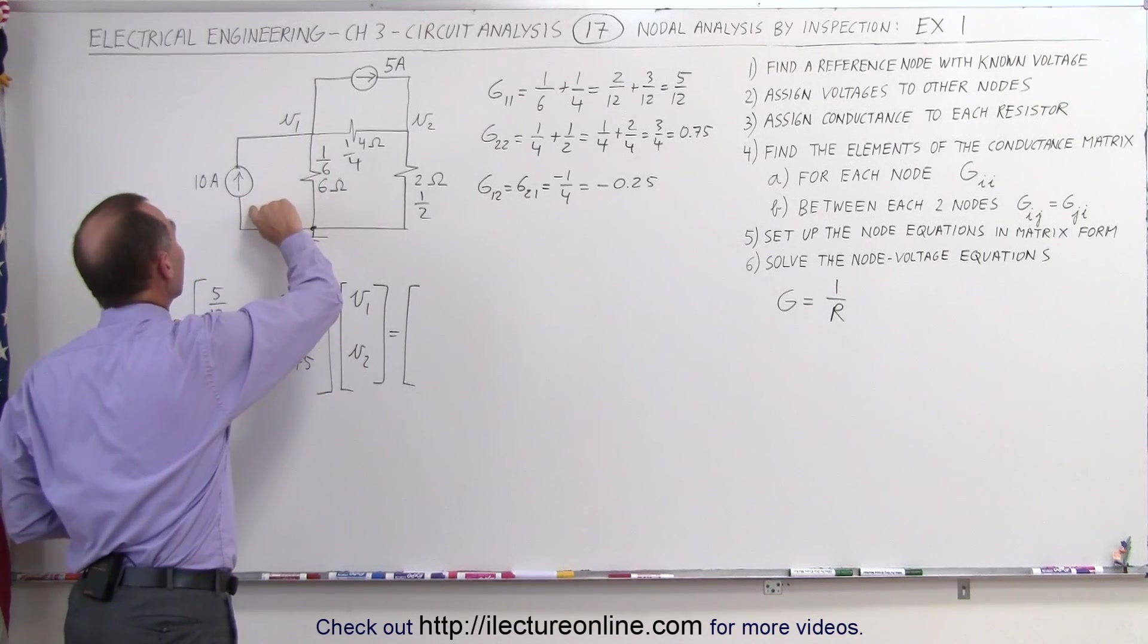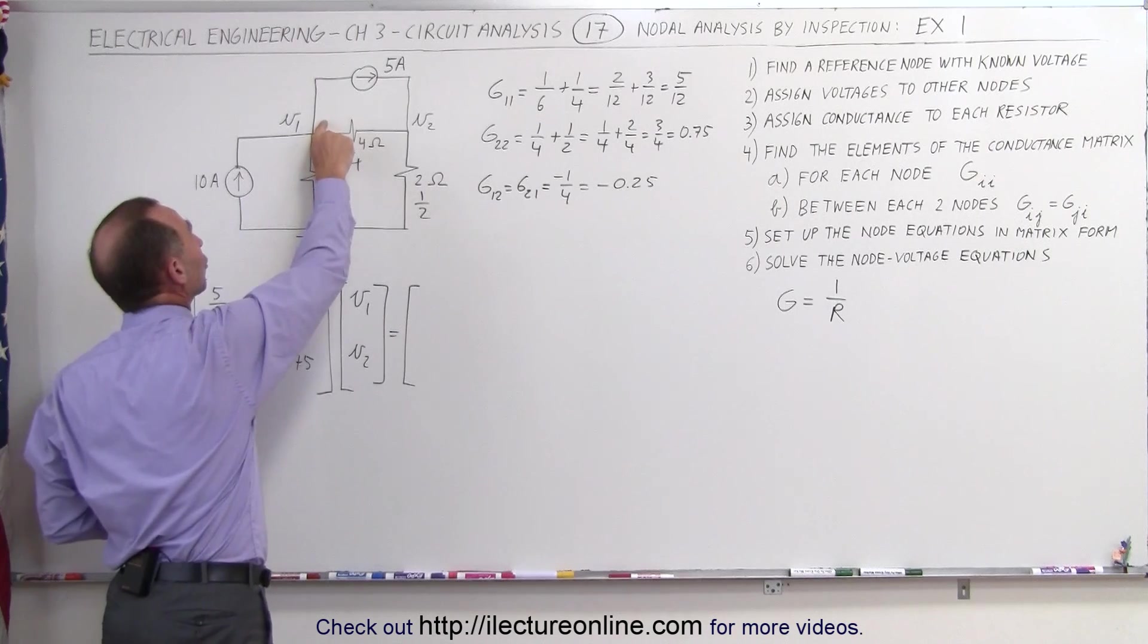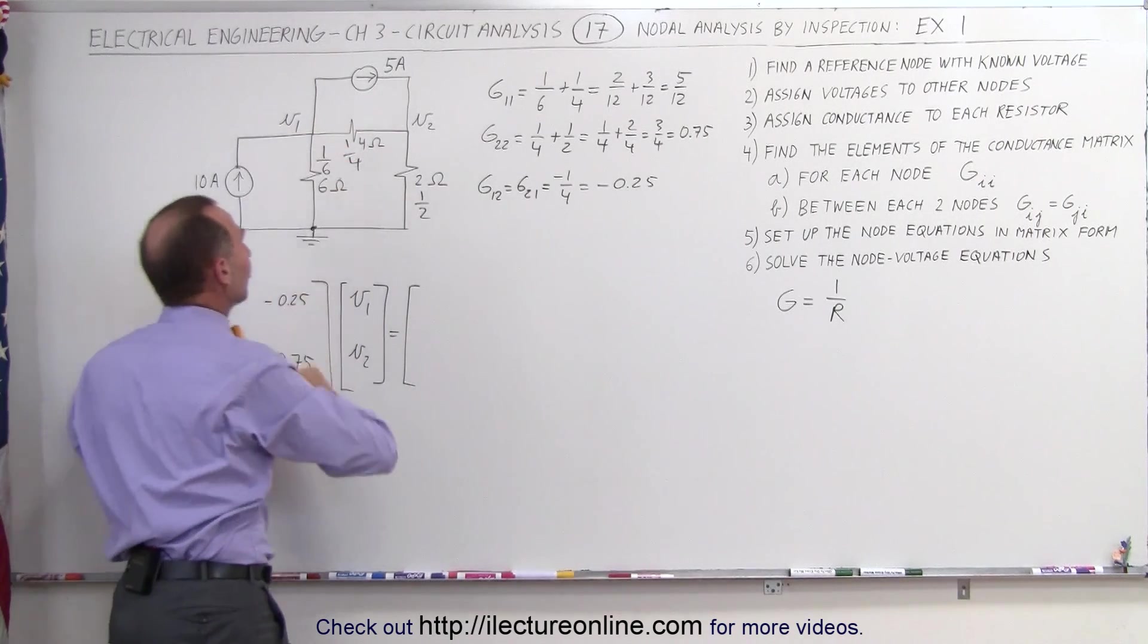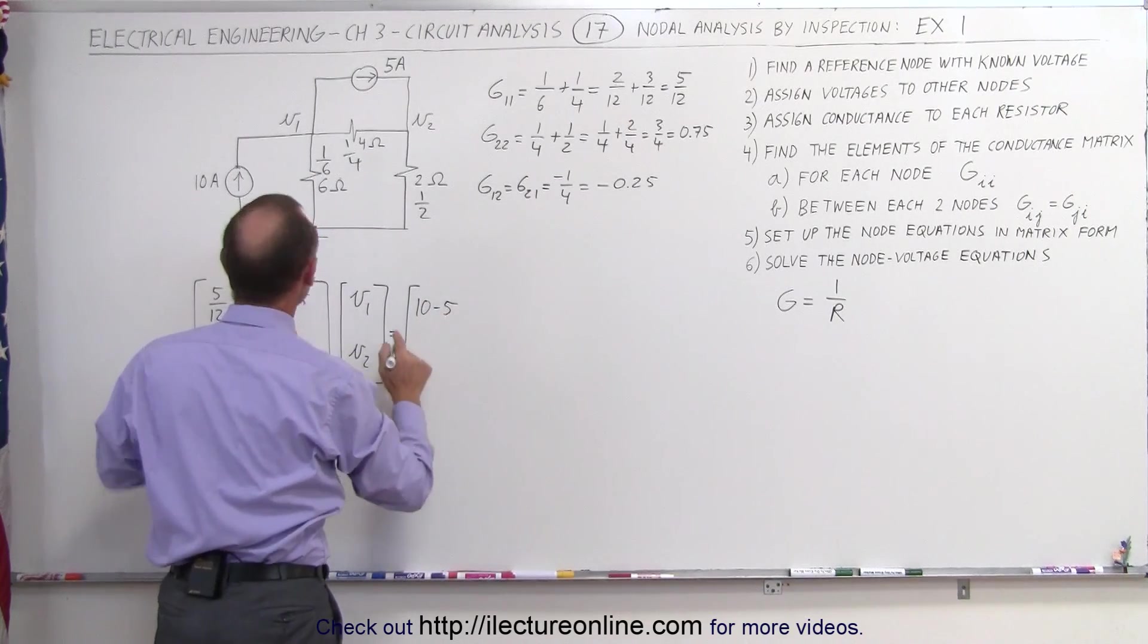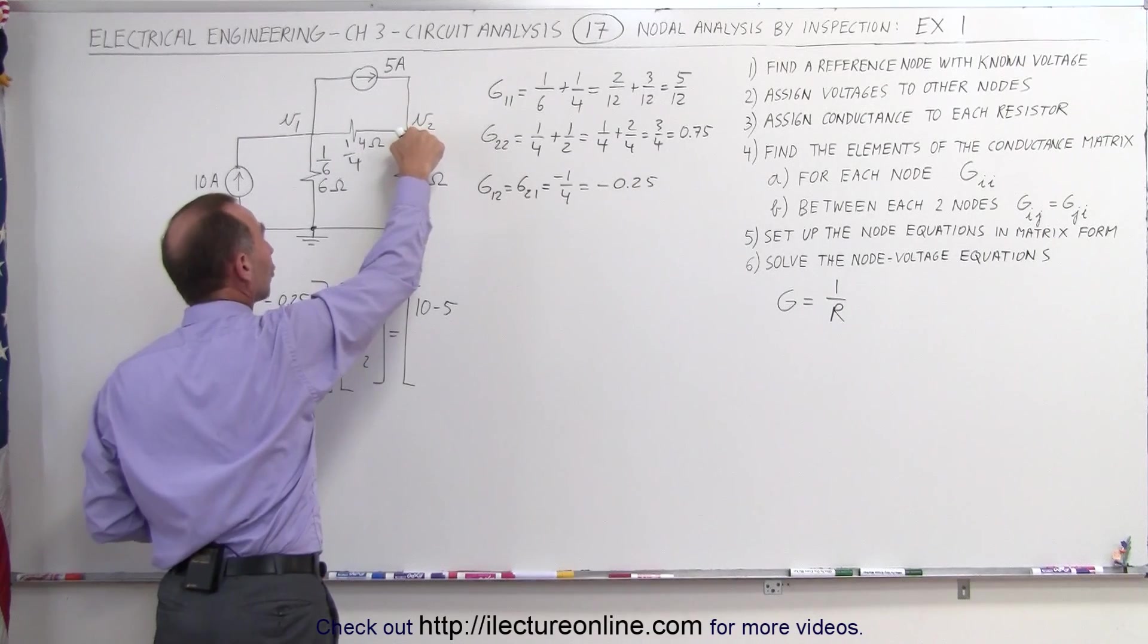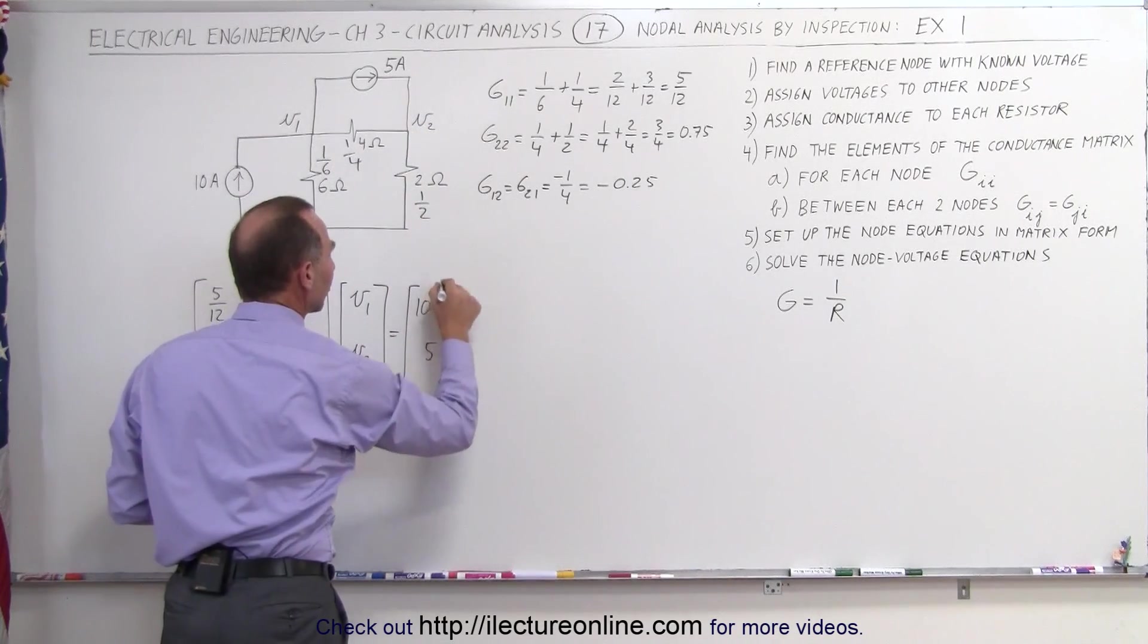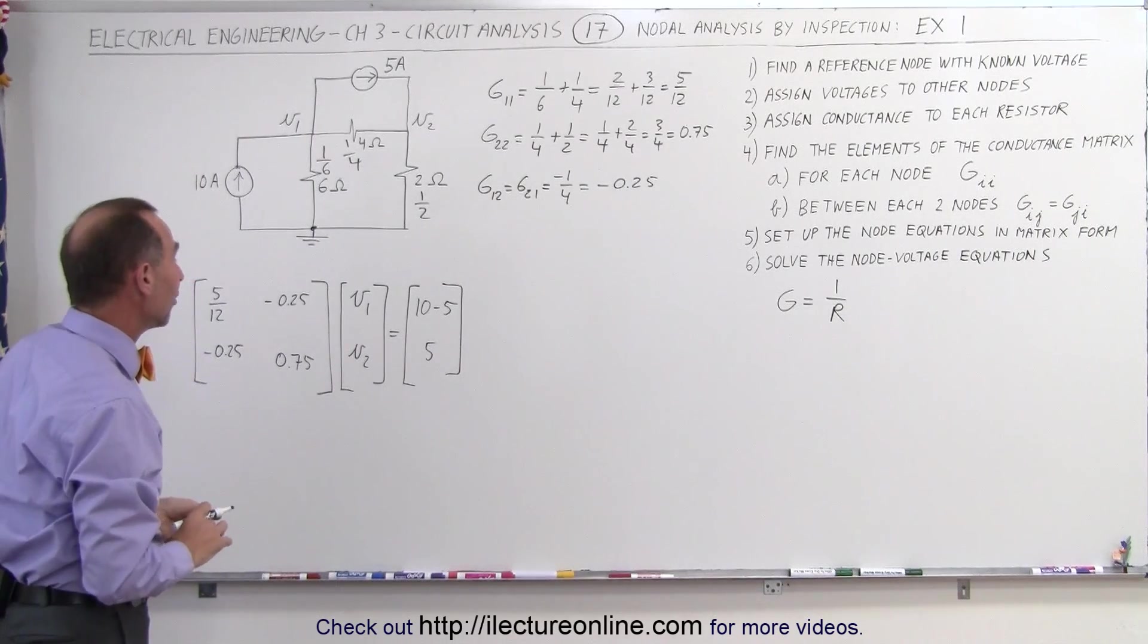We simply here look at all the current sources entering V1, node 1, and all the current sources leaving, so 10 minus 5 is equal to 5. I'll write it as such so you can see it. So this is 10 minus 5, and then here on node 2, there's only one current source entering, that would be 5 amps entering. And so in essence, we have 5 and 5. I just wrote it as 10 minus 5 so you can see where it came from.